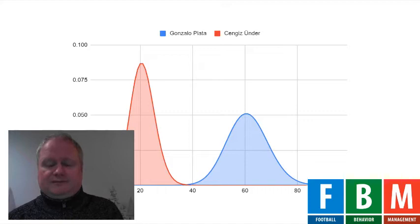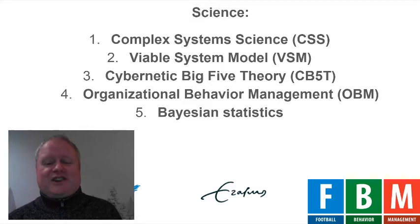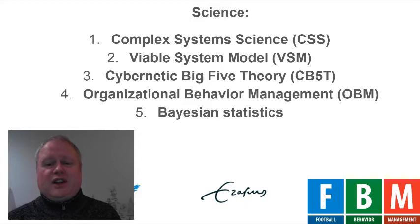Now we come to the sciences. We're actually going to use five different sciences, but some of them in a limited way. First, we started with complex system science. A few years ago, new science started dealing with complexity, and that's also what the club has to do — deal with its internal complexity and the external complexity of the environment and the future. The whole risk management system is basically a system to deal with the complexity in our society and in football.